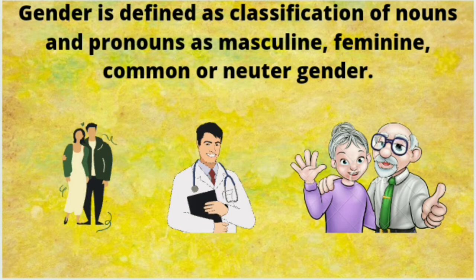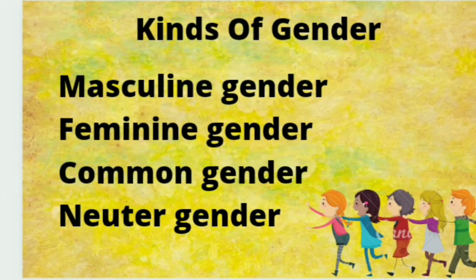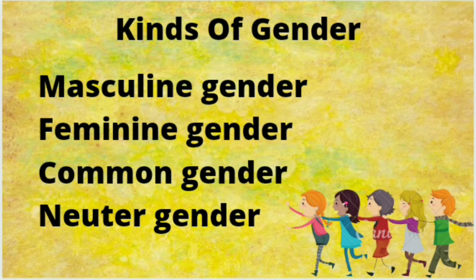If we talk about Sanskrit language, there are three kinds of genders: streeling, pulling, and napusakling. But here in English language, we have four kinds of genders: masculine gender, feminine gender, common gender, and neuter gender. So let's discuss each of them.